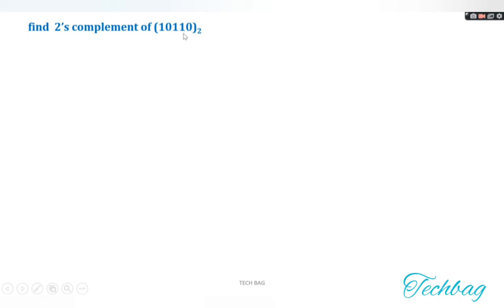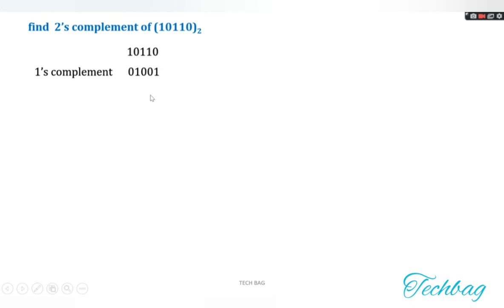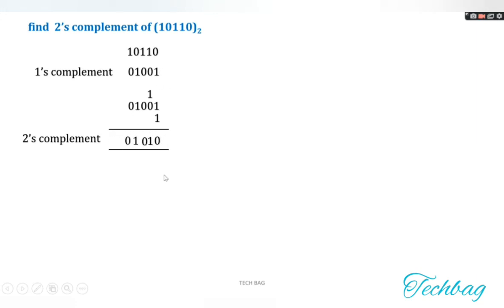Find the 2's complement of 10110. To get 2's complement, add 1 to the 1's complement. First, invert each bit of 10110 to get the 1's complement: 01001. Then add 1: 01001 plus 1. Starting from the right: 1+1 = 0 carry 1; 1+0 = 1; then 0, 1, 0 — giving 01010. So 01010 is the 2's complement of 10110.